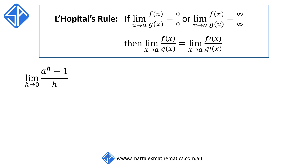To check if we can use L'Hôpital's rule for this limit, suppose we substitute h equals 0 into the numerator and the denominator. The numerator gives us a to the 0 minus 1, which is 1 minus 1, or 0. The denominator simply gives h equals 0. So we get 0 over 0, which is a sufficient condition for us to use L'Hôpital's rule.